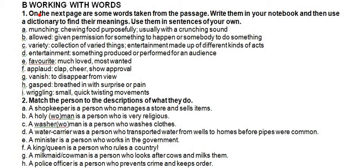The first word is 'munching' — munching means chewing food purposefully, usually with a crunching sound. Next is 'allowed' — allowed means kisi cheez ki ijazat hona, given permission for something to happen or somebody to do something. Next is 'variety' — variety is a collection of varied things. 'Entertainment' is made up of different kinds of acts — something produced or performed for an audience.